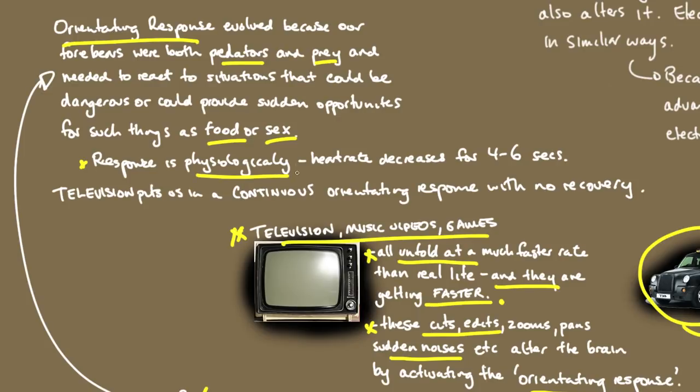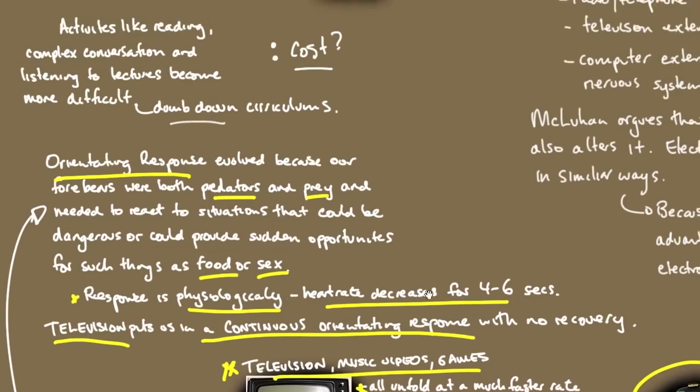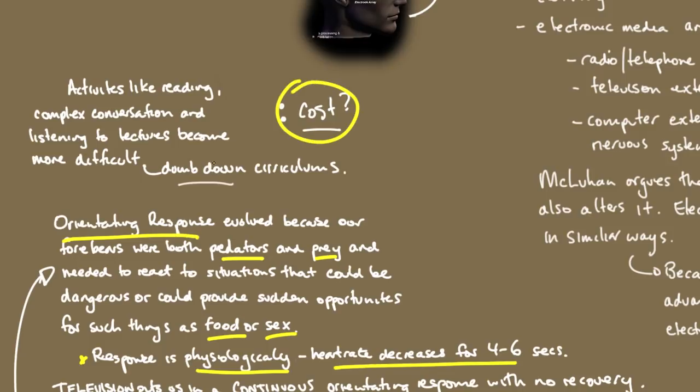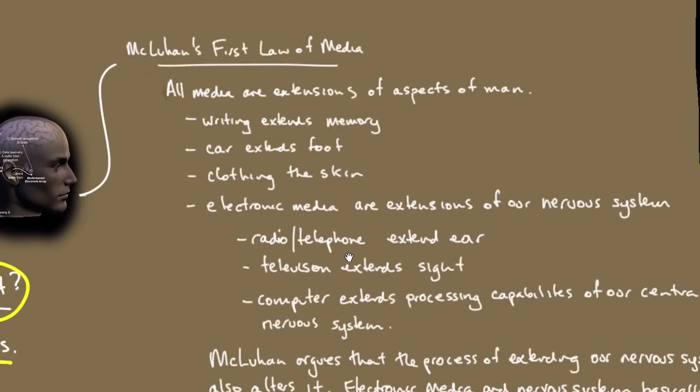The response is physiological. Our heart rate decreases for four to six seconds when this occurs. With television, for example, this puts us in a continuous orientating response with no recovery. This is why you will see that some people complain of being exhausted after watching television for a few hours. There is a cost to this. Activities like reading, complex conversation, and listening to lectures become even more difficult. And we start to dumb down our curriculums as a result.